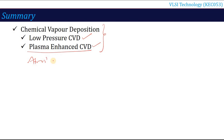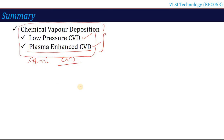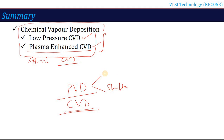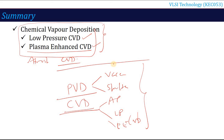With this lecture we have completed our coverage of chemical vapor deposition methods: low pressure CVD, plasma enhanced CVD, and atmospheric pressure CVD. In the next lecture we will discuss the deposition processes for polysilicon, silicon dioxide, and silicon nitride. To summarize, film deposition methods include physical vapor deposition, which has two categories — vacuum deposition and sputtering — and chemical vapor deposition, which has three reactors: atmospheric pressure, low pressure, and plasma enhanced CVD.